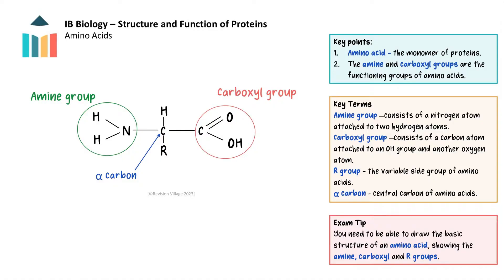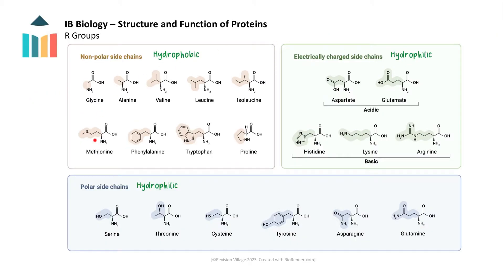The R group gives the different amino acids their different chemical properties. There are 20 different naturally occurring amino acids in the human body, each with a different R group, which determines the amino acid's shape, size, charge, and reactivity. R groups can be hydrophobic, repelling water, or hydrophilic, being attracted to water. Hydrophilic R groups are polar or charged and can be acidic or basic.